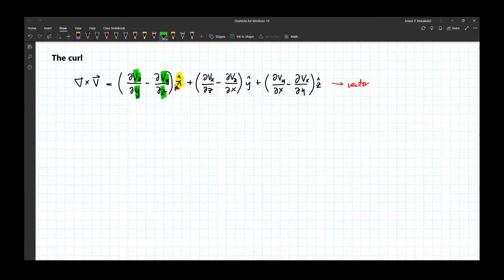Okay, so for example here, you're looking at the x component of the curl, so that means the quantities involved are along the y and z.